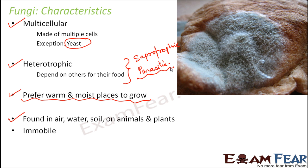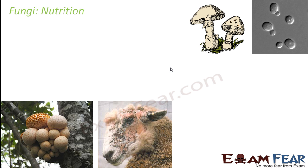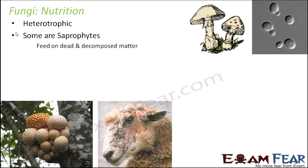Fungi are immobile — they cannot move from one place to another like animals. They have heterotrophic nutrition, depending on others for their food. Some of them are saprophytes, meaning they feed on dead and decomposed matter. Examples include the mold on the orange, the fungi which develops on bread, and mushrooms — these are all saprophytes with a saprophytic mode of nutrition.